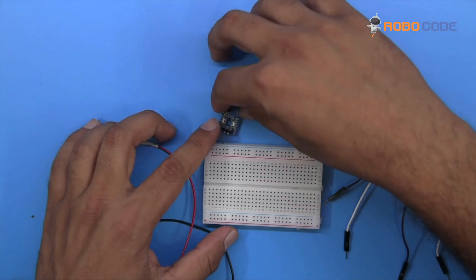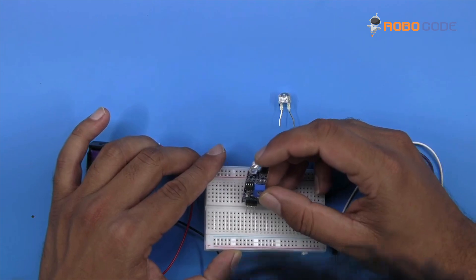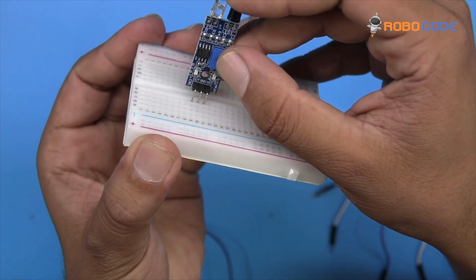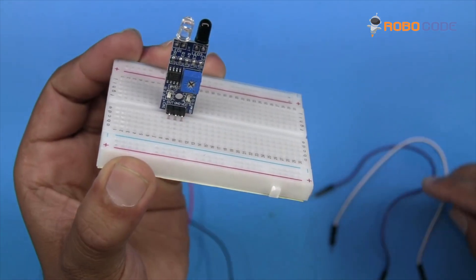Take the breadboard and the IR sensor. The IR sensor will have three pins; insert those three pins as you can see in this video. Once that is done,